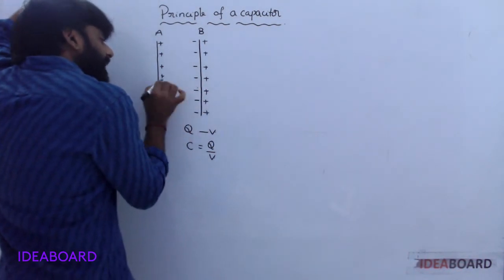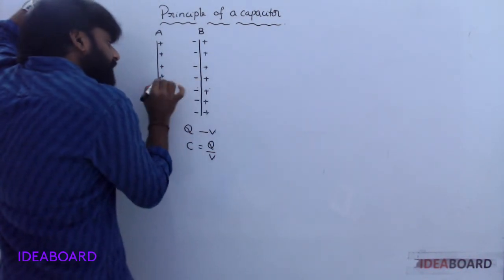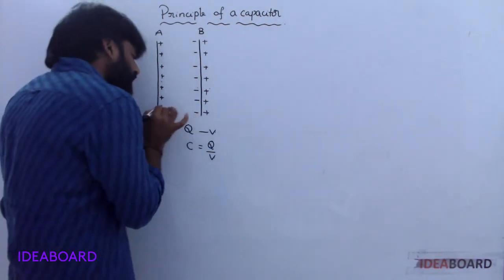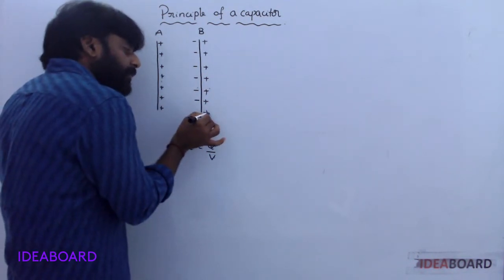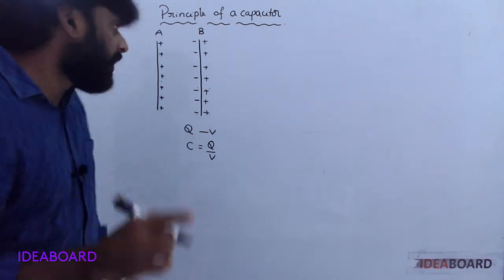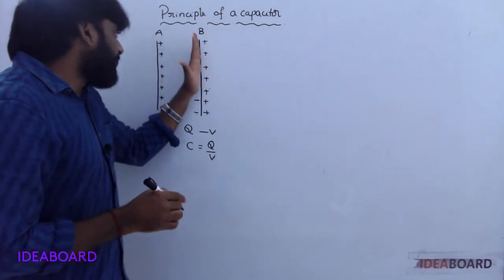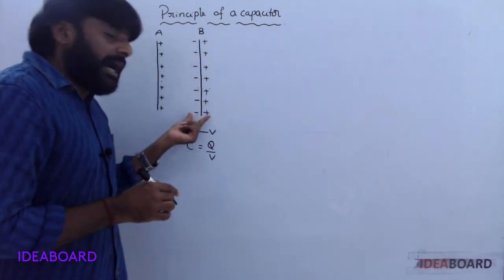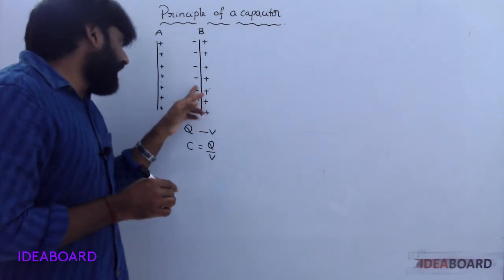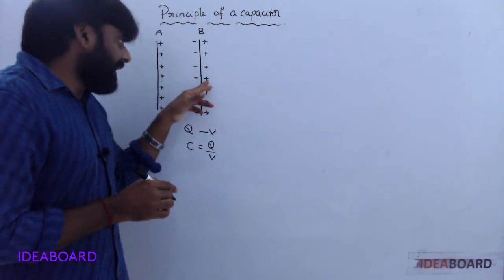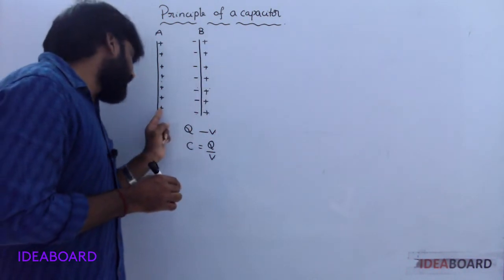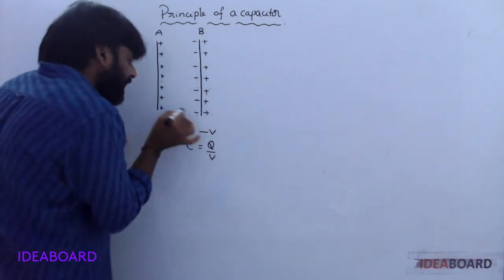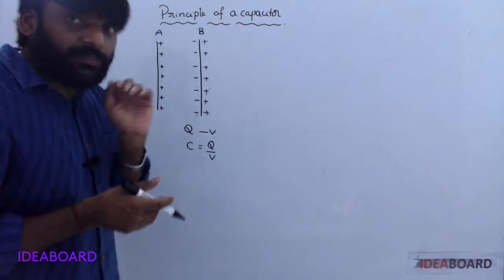Due to the negative charge on the nearer side, the potential of Plate A is decreased. Due to the positive charge on the far side, its potential is increased. However, since the negative charge is nearer, the decrease in potential is more compared to the increase. So the net effect is that the potential of the charged conductor decreases.